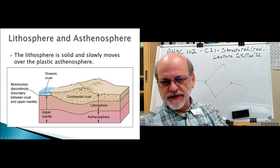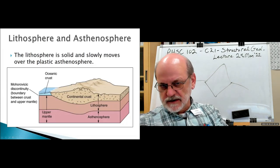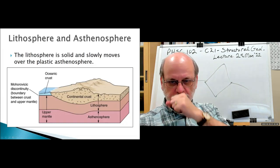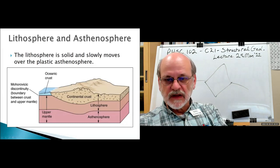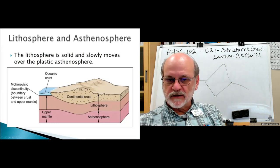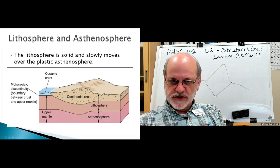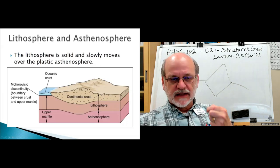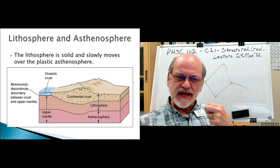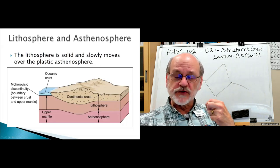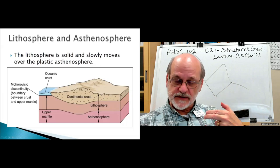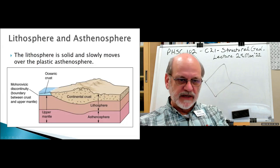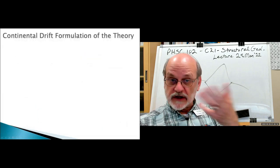We have a very thin oceanic crust and a thick continental crust. Below that we have part of the upper mantle, which is also solid but different in composition. It behaves in such a way as to produce faults in the crust and this upper part of the mantle — that's where tectonic activity, like earthquakes, takes place.